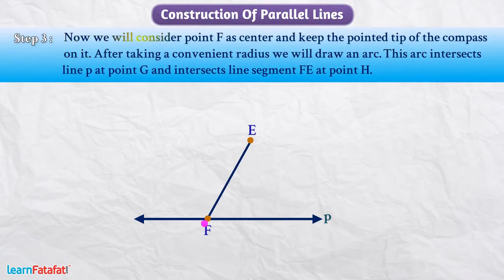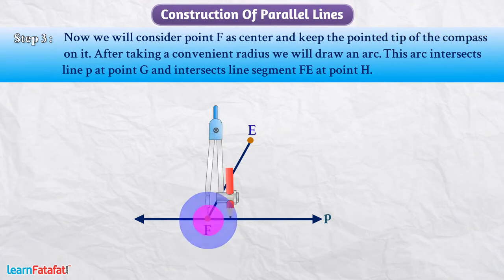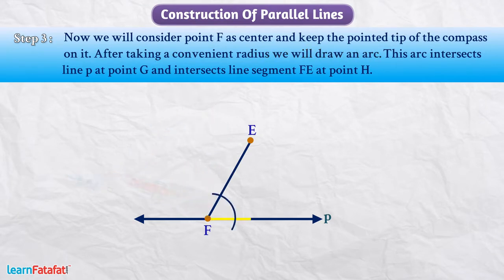Now we will consider point F as center and keep the pointed tip of the compass on it. After taking a convenient radius, we will draw an arc. This arc intersects line P at point G and intersects line segment FE at point H.